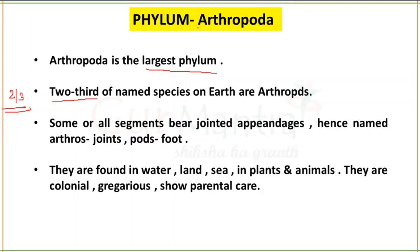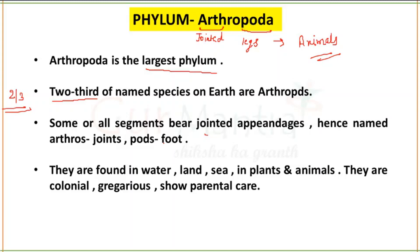Now if we talk about the name — 'arthro' means jointed and 'poda' means legs. So in this group, the organisms have jointed legs. Some or all segments bear jointed appendages. Remember, in the exam they often ask the meaning of the word Arthropoda — arthro means jointed, poda means legs.